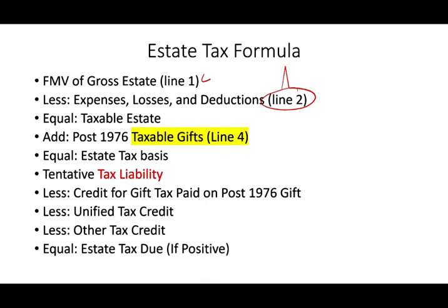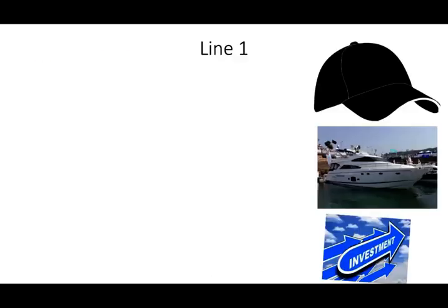Eventually we'll work a complete example illustrating this formula, but we're going to focus on line one. So what is the gross estate? Basically, the gross estate is everything that you own at death — a hat, a boat, your investments, your car, your clothes, your vehicle, your jewelry, your furniture. All of these are part of your estate.